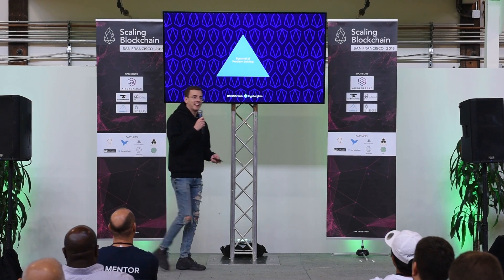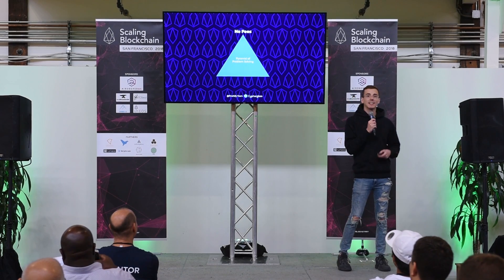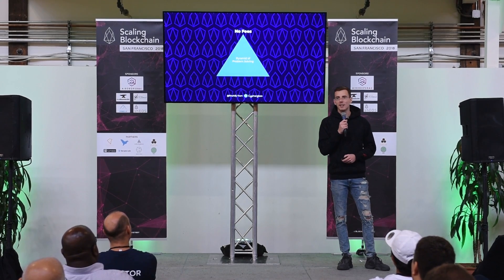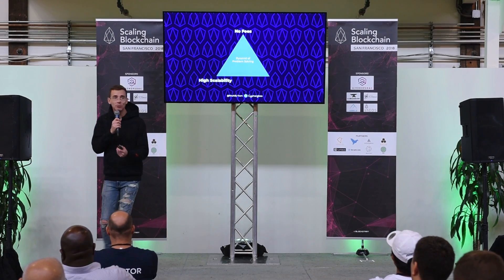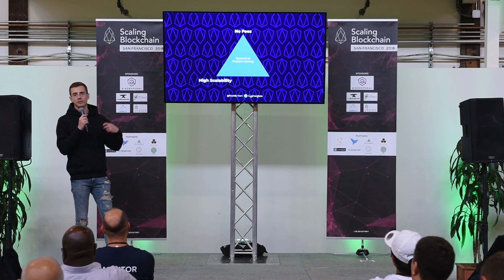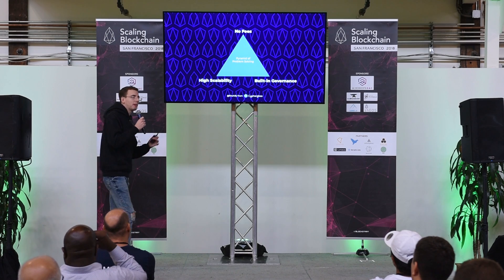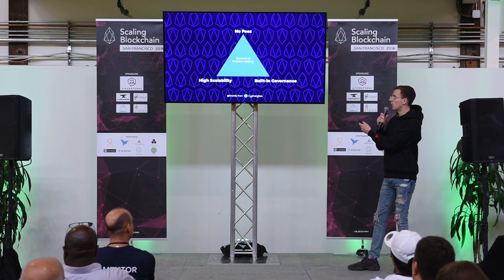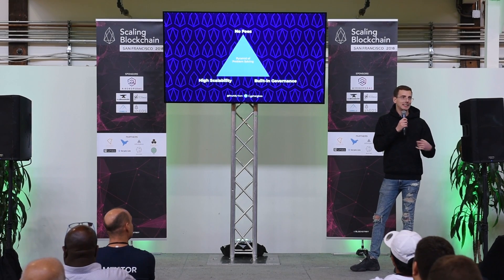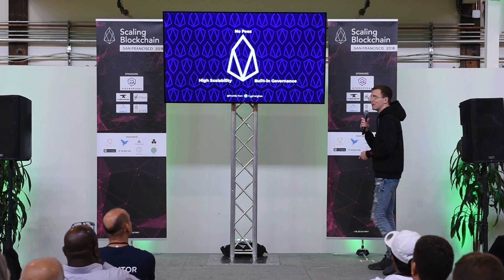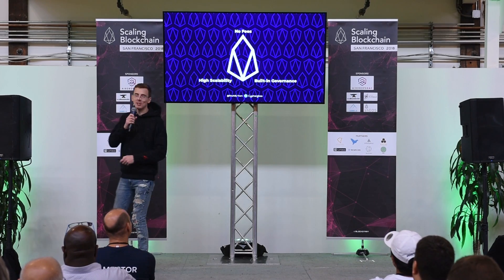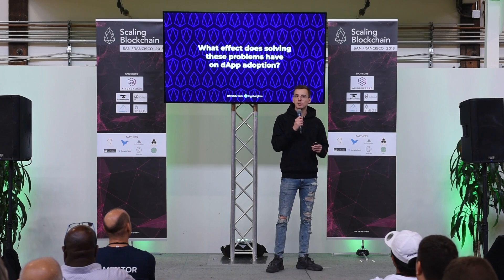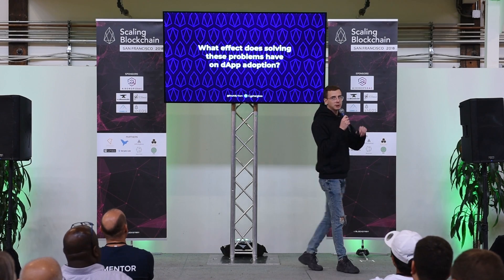We have what's called the pyramid of problem solving. We need a platform with no fees — where I can like a post on a decentralized Twitter for free, instantly. We need high scalability to support the transaction throughput for a million users on any dApp. And we need built-in governance to reach consensus and implement solutions on-chain. Interestingly, we actually have a platform that solves all three of these today — it's called EOS. It's been around for about five months, and we're starting to see its effect on dApp adoption.